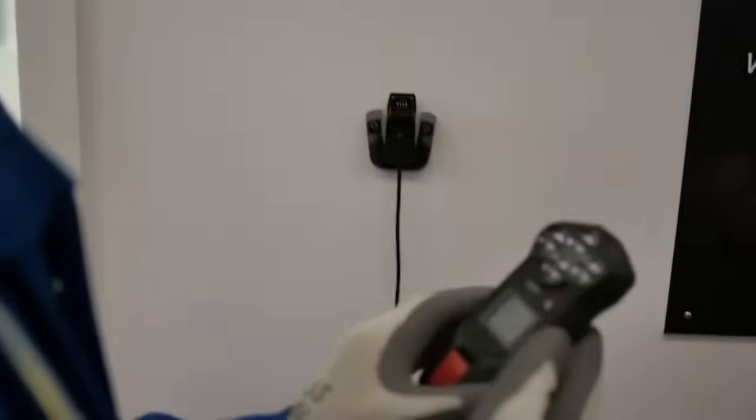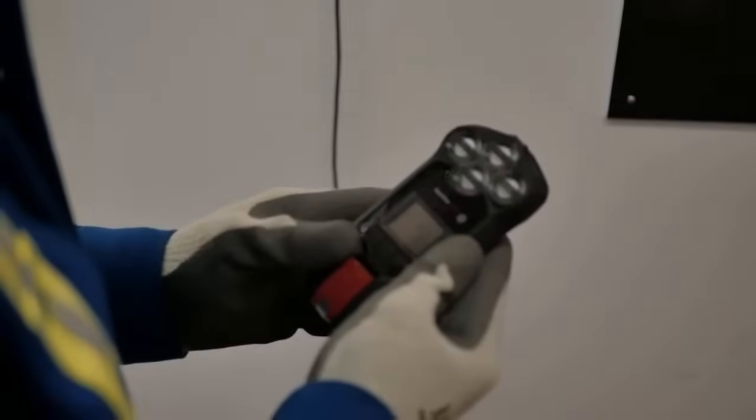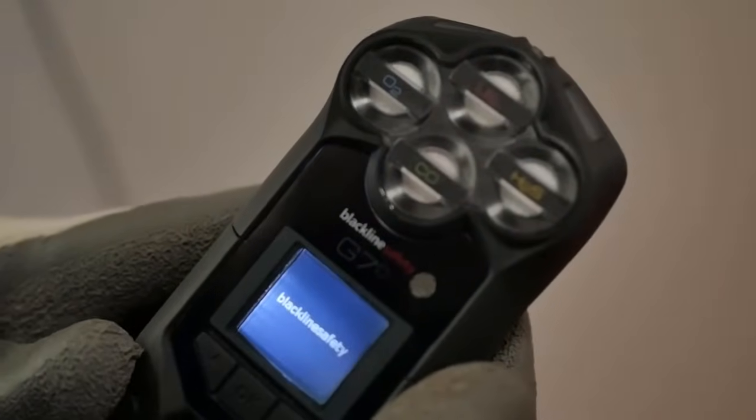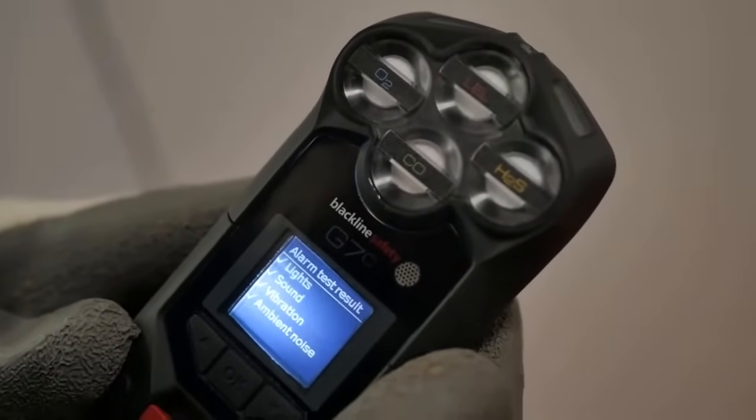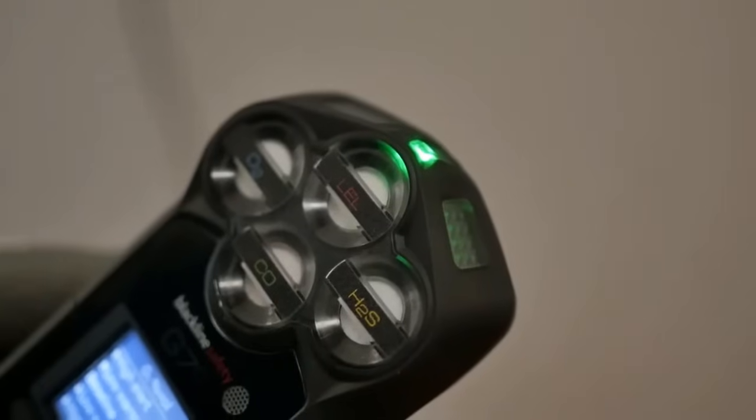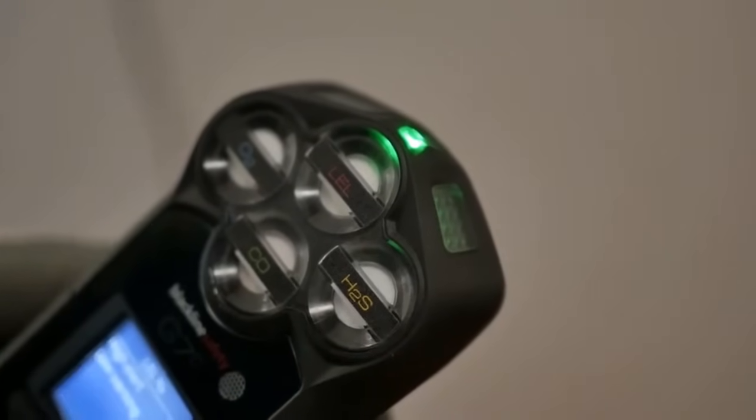To turn G7 on, press and hold the power button. As it starts up, the green Sure Safe light at the top will begin flashing as it connects to the Blackline Safety network. When the green light is solid, your safety is being monitored by a live team who can respond if you need help.